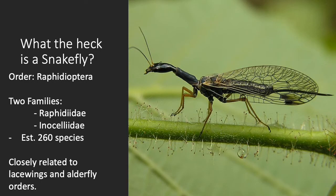Snake flies belong to the order Raphidioptera, which in Latin translates to 'needlewing.' Today, the snake fly order consists of two families: Raphidiidae and Inocelliidae, with roughly about 260 living species. To make things perfectly clear, these are not a fly — that common name is just an unfortunate association, because these beauties are way cooler than any fly, except maybe the syrphid or flower flies. These insects are actually much more closely related to Neuroptera, otherwise known as the lacewings. Snake flies, along with Neuropterans and Megaloptera, which is the alderfly order, make up the insect clade Neuropterida.